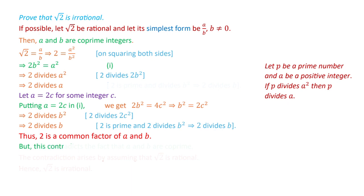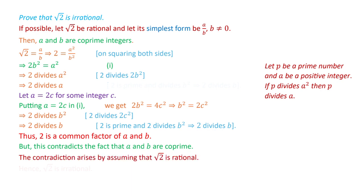This contradicts the fact that a and b are co-prime. The contradiction arises from the assumption that square root 2 is a rational number. That assumption cannot hold, because if we assume root 2 is rational, this kind of contradiction will arise. So our supposition is wrong. Hence, square root 2 is an irrational number.